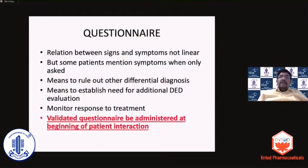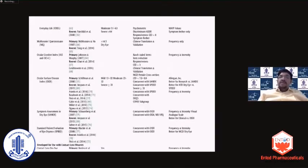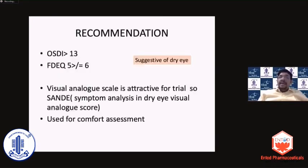The questionnaire needs to be a validated one and is generally administered when the patient starts evaluation in the clinic. There are many questionnaires in the published literature, but what has been recommended by the DEUS2 is the OSDI and the DEQ5. You also have the option of using the Sandy symptom score, which can be used to assess patient comfort pre and post interventions.